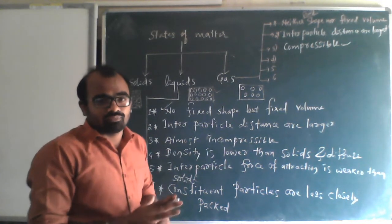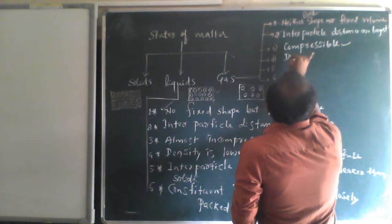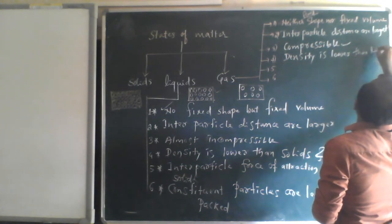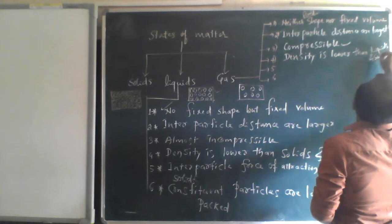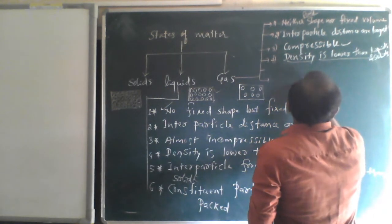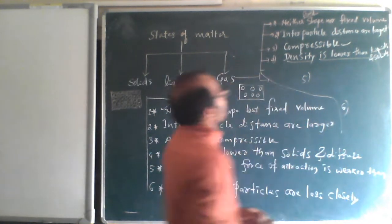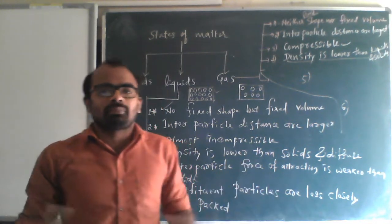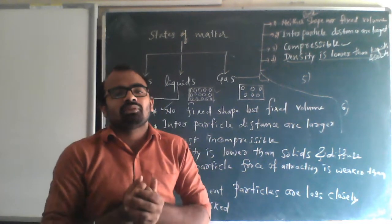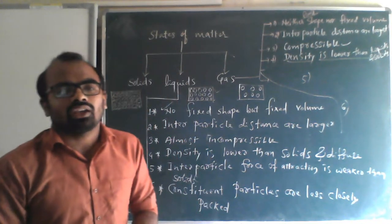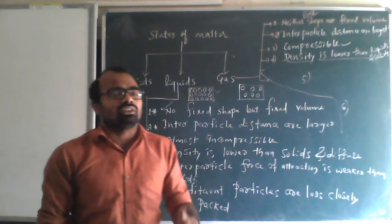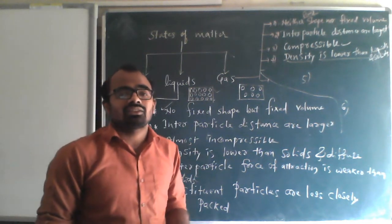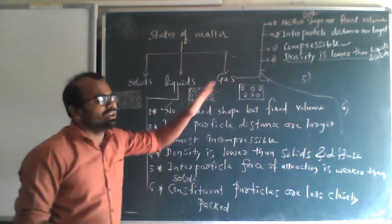Fourth property: density of gas is very low — lower than both liquids and solids. This is because gas occupies maximum space with less mass. When anything occupies maximum volume with less mass, its density is very low. So density of gas is very much low compared to liquids and solids.